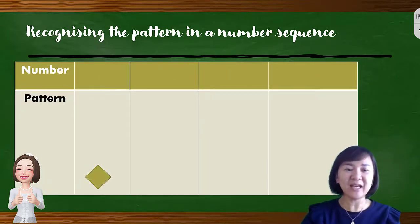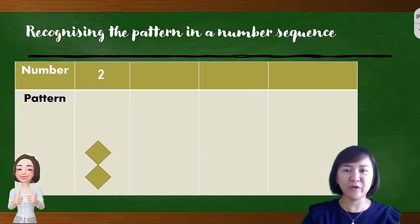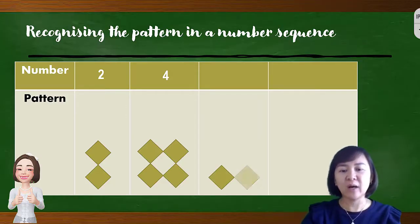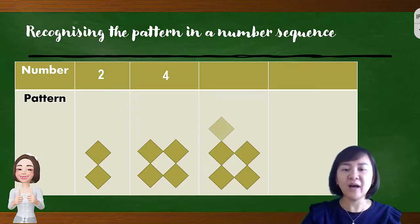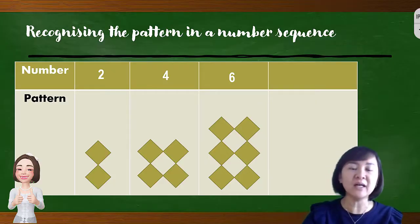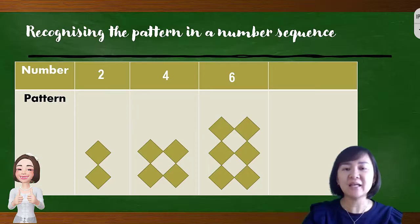Next example: it's given 2 rhombuses, so we state the number 2. For the second pattern, we have 4 rhombuses, so we state the number 4. The next one has 6 rhombuses, so we state the number 6. So 2, 4, 6 can form a sequence — the pattern is plus 2.